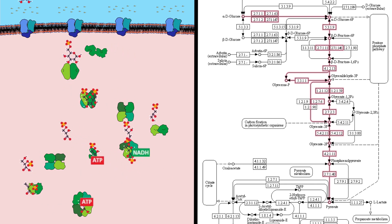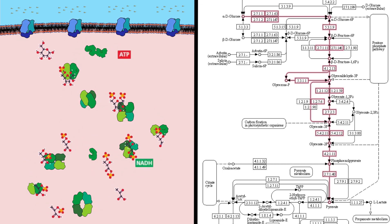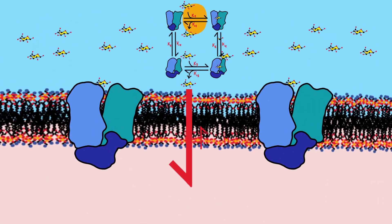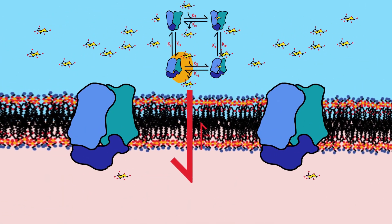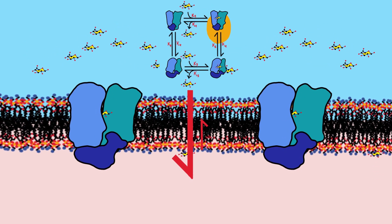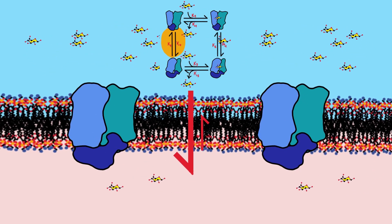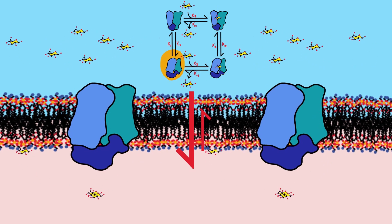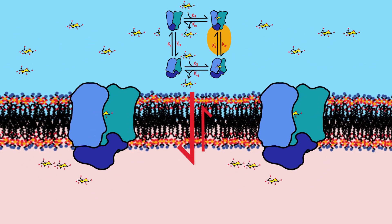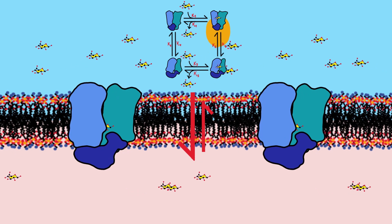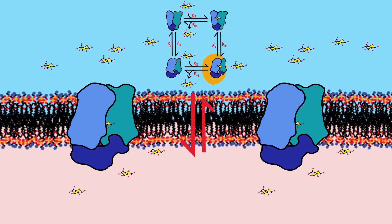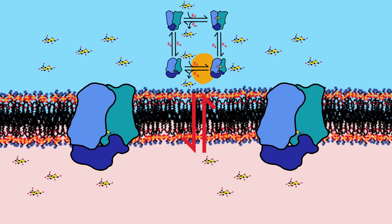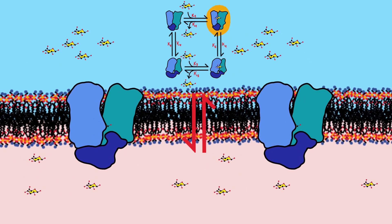Cells absorb carbohydrates through glucose transporters. This protein works by passive transport, so glucose flows from higher to lower concentration. If both sides begin to have the same concentration, the flow slows down because some carbohydrates return to the outside of the cell with the same probability they go in. Once both sides contain the same glucose concentration, equilibrium is reached and flow stops.